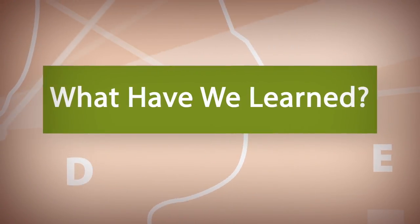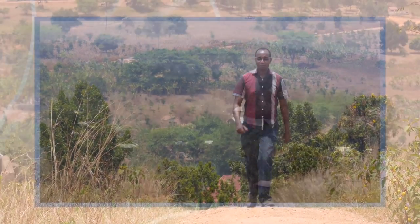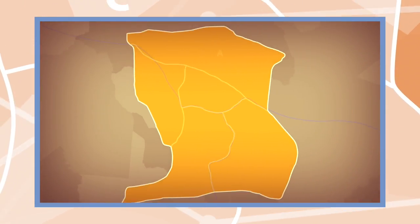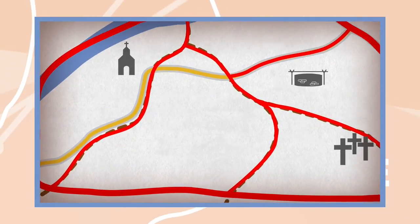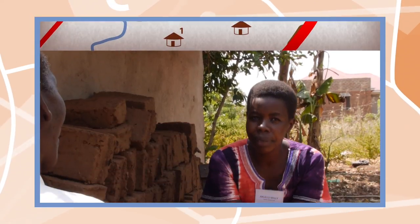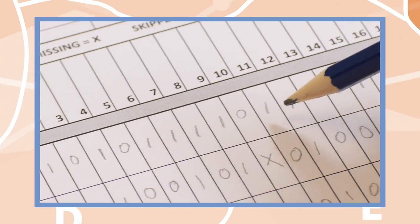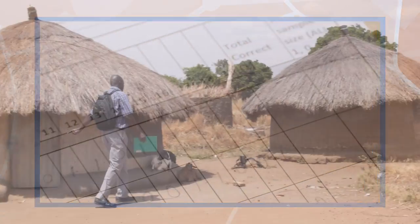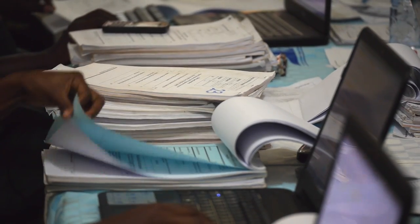So what have we learned? You should now have a pretty good idea of how LQS works. You've seen how to divide up a community into supervision areas, and how to locate random interview locations within each area. We've looked at the best way to conduct an interview, and what to do with the data when you're finished. Following these steps in exactly the right way will ensure that you have consistent data, which can be put to use in managing your health program.